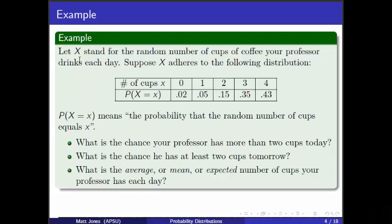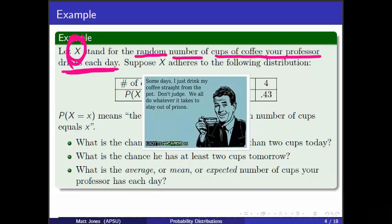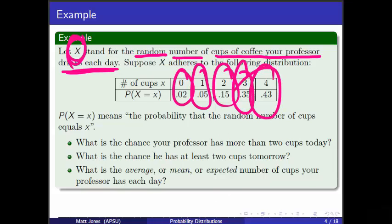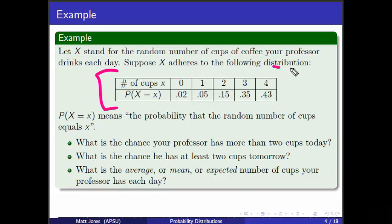Let X (capital X) stand for the random number of cups of coffee that your professor drinks each day. You can't predict this with certainty. You might have zero cups with probability 2%, one cup with probability 5%, two cups with probability 15%, three cups with 35% chance, or four cups with 43% chance. All of this is the distribution — the top row gives the possible values, the second row gives the probabilities.